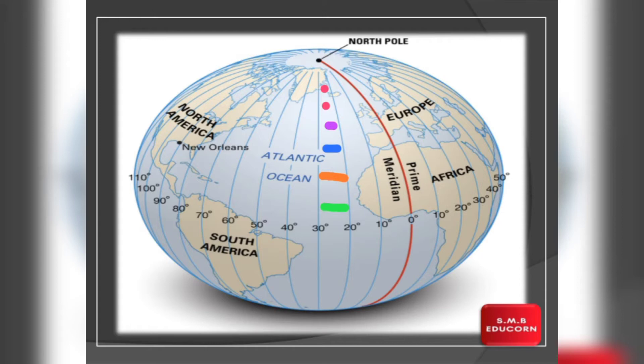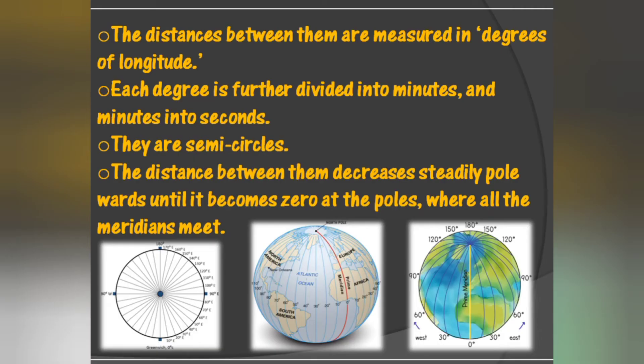Ab is concept ko samajhne ke liye, diye gaye is image ko dhyan se dekhiye. Longitude ke beech ki jo distance hoti hai, woh equator par sabse zyada hoti hai, aur yeh longitude jaise jaise upar jati rahegi, iske beech ki jo distance hoti hai, woh bhi kam hoti jayegi. Aur yeh longitudes ke beech ki jo distance hoti hai, woh pole me jahakar zero hoti hai, jahaan par sare meridians milte hai. Iske alawa, longitudes ke beech ki jo distance hoti hai, woh degree me measure ki jati hai and each degree is further divided into minutes and each minute is further divided into seconds.